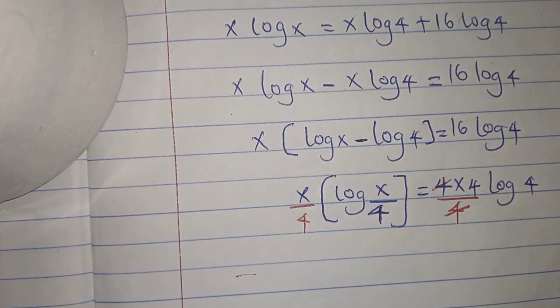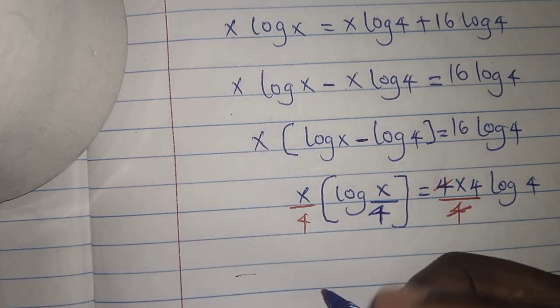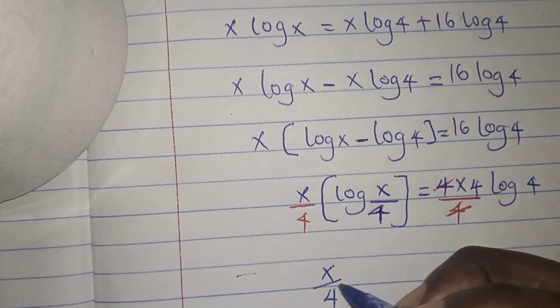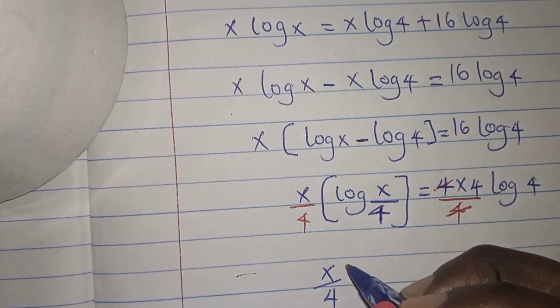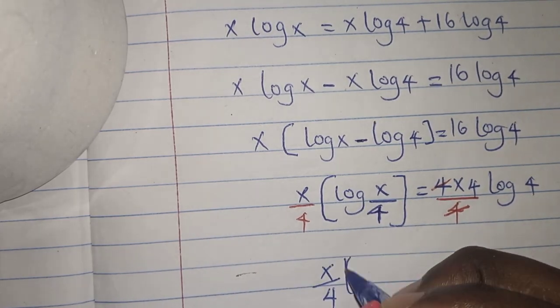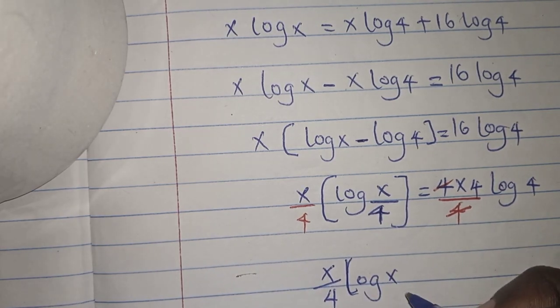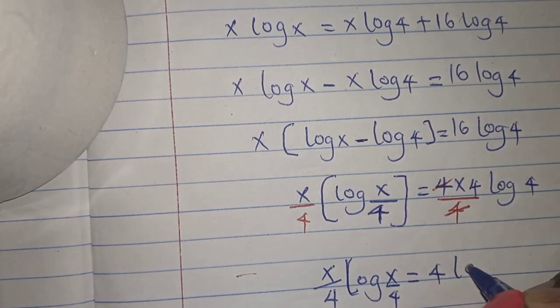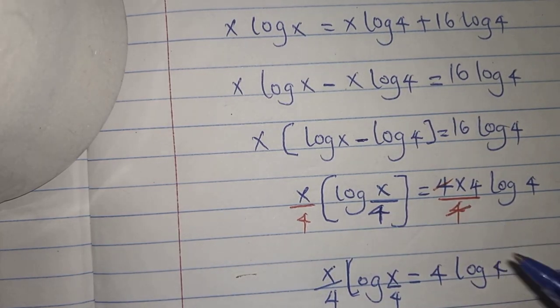So this 4 will cancel with this one and I'll remain with x log 4. Sorry, x divided by 4 into, let me just write log x divided by 4 is equals to 4 log 4. So this 4 canceled.